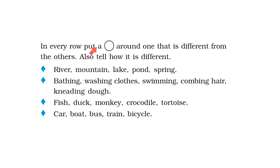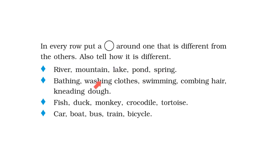In every row, put a circle around one that is different from the others. Also tell how it is different. So we have to find the odd one out. In the first row I have river, mountain, lake, pond and spring. River, lake, pond and spring are sources of water — that is, we get water from these places. Therefore the odd one out here is mountain.